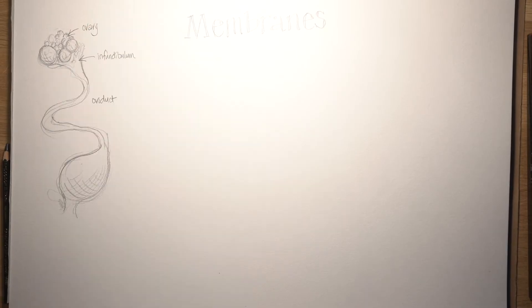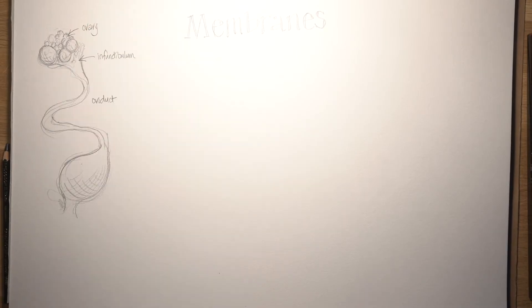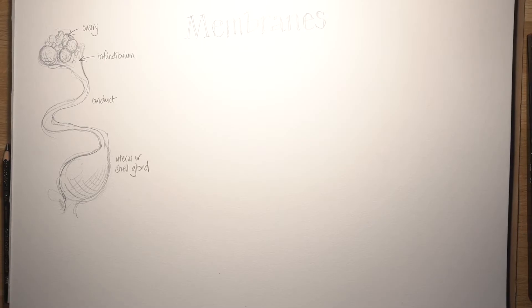I'm starting off by drawing the hen's reproductive tract, starting with the fat ovary at the top, a single ovary bulging with huge eggs, then there's the infundibulum, the funnel-like entrance to the oviduct, and the oviduct itself leading down to the uterus or shell gland, where the egg will pause for a moment before being laid.